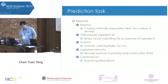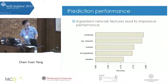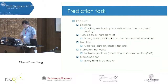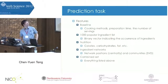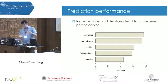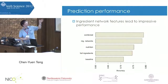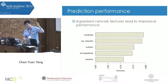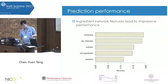We have many features. For the baseline, we include cooking method, preparation time, and number of servings. Combining all features together, we can reach about 80% accuracy, and the ingredient networks give very impressive performance.